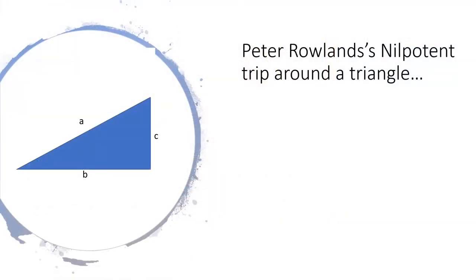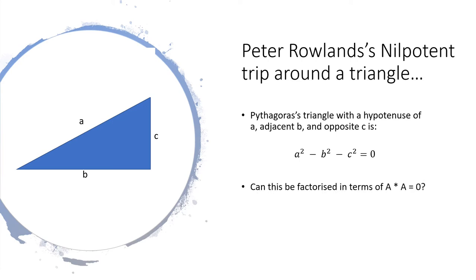There's a very simple way of explaining Rowland's mathematics. It basically involves a Pythagorean triangle where the square of the hypotenuse is equal to the sum of the squares on the other two sides. So if the hypotenuse is a and the other two sides are b and c, then you can say that a squared minus b squared minus c squared is zero. So can that equation be factorised in such a way that something multiplied by itself can represent a squared minus b squared minus c squared and in turn represent zero? The answer is yes.